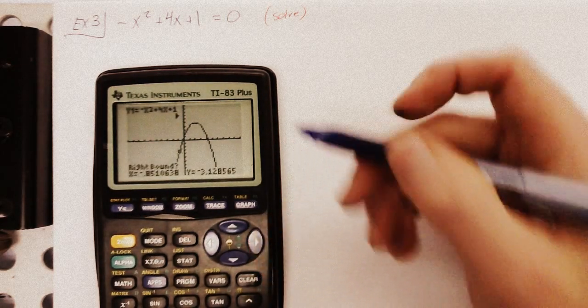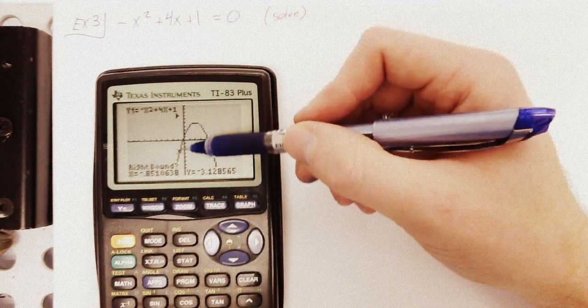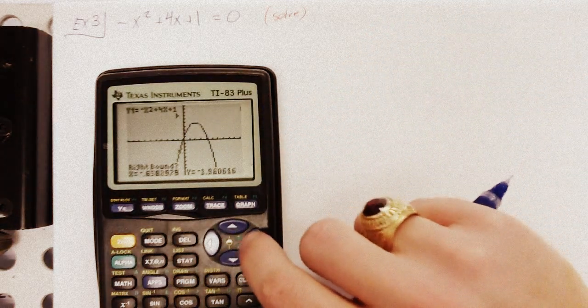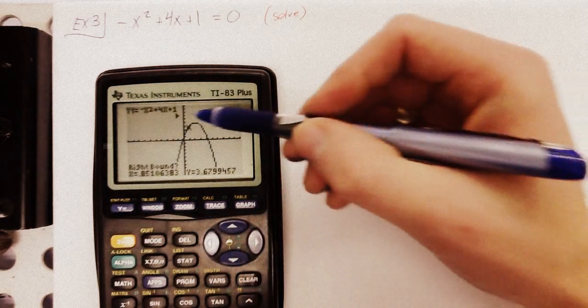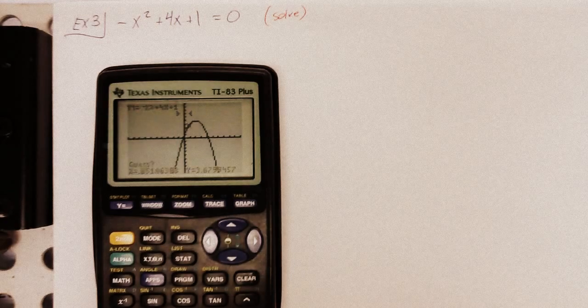It's going to say right bound. Well, again, if this is where it's crossing the x-axis, then to the right of where my pen's being, you know, drawing an imaginary line right now, go over here. Okay. Well, I'd say that's to the right. Enter again.